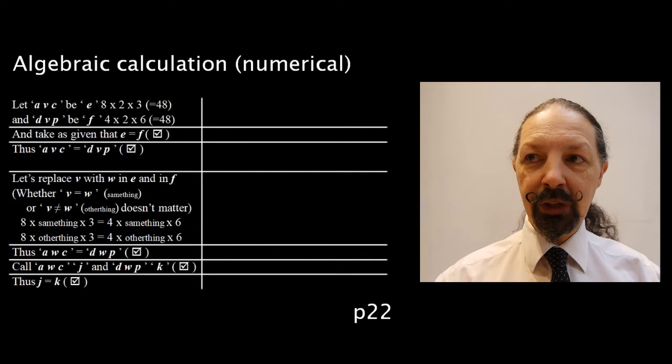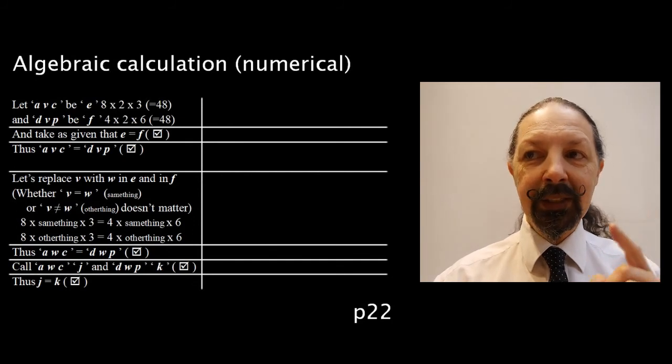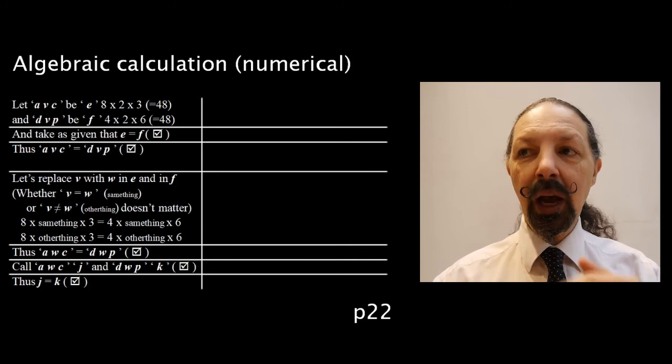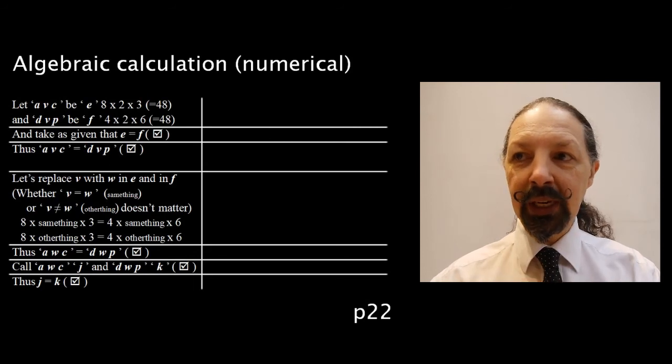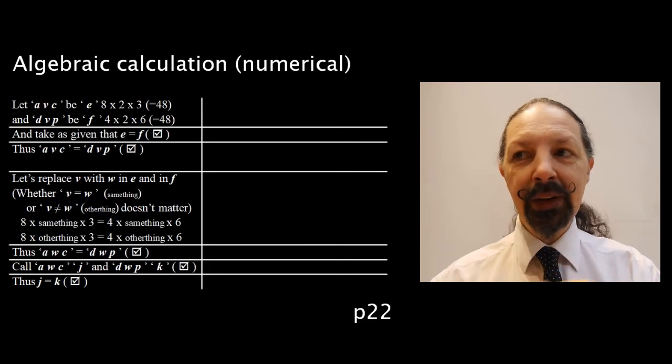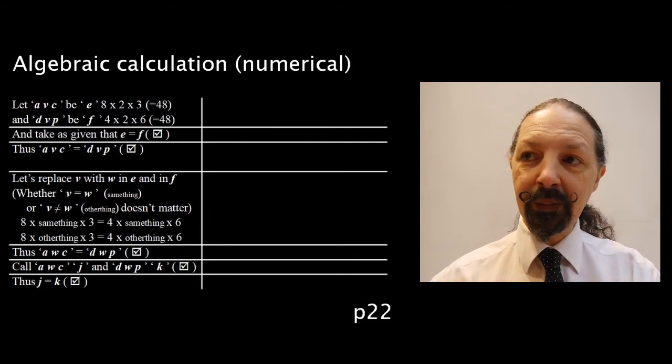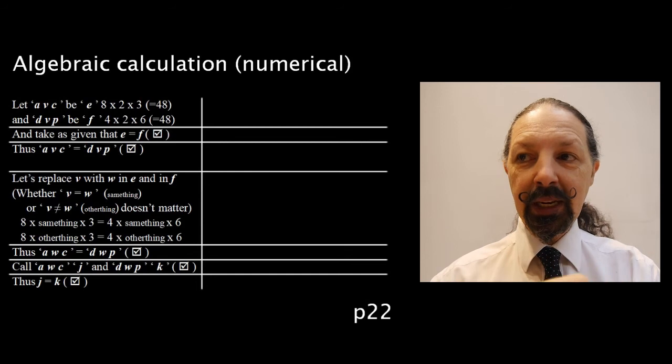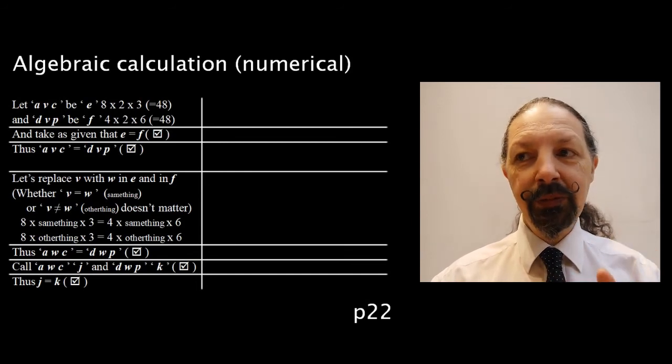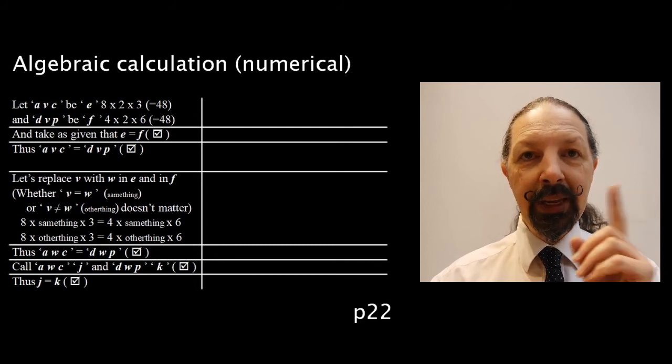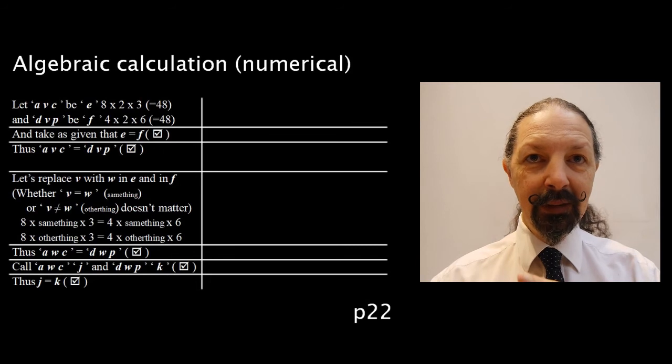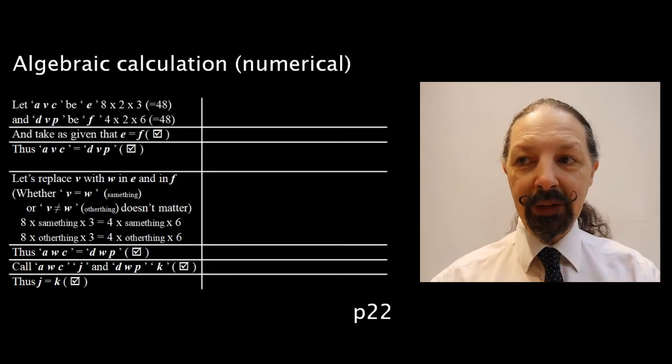Here's the mathematical version of it. Let's say that AVC, we call E, and we assign numerical values of 8 times 2 times 3 to it. The product of those is 48. Let's take DVP to be F, and assign the values 4 times 2 times 6, the product of which is also 48, so E equals F. So AVC equals DVP. Now let's replace V with W in both E and F. Whether V equals W is the same thing for the same value, or whether it's different, some other value, doesn't really matter.